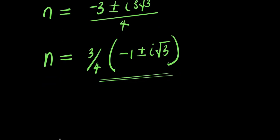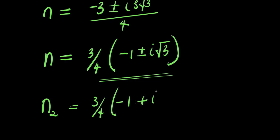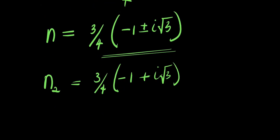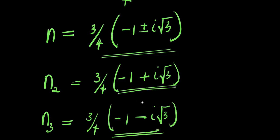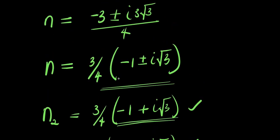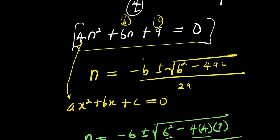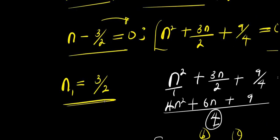We have two complex values for n: n equals (3/4)(negative 1 plus i√3), and n equals (3/4)(negative 1 minus i√3). The real value for n is 3 over 2.